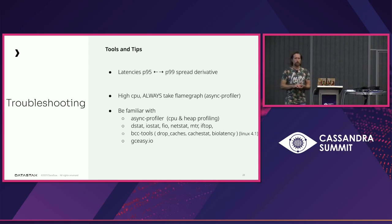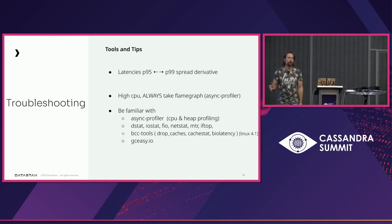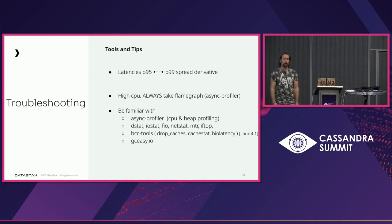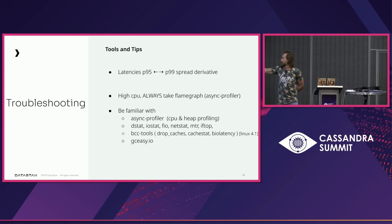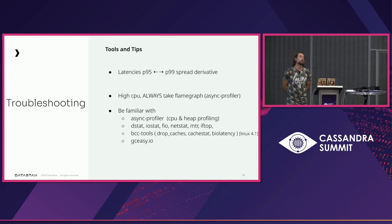If you have CPU problems or CPU getting saturated, take a flame graph before you do anything — even if you're 100% confident you know the problem. Flame graphs are also a fantastic way to get into the Cassandra codebase, which is not easy to read from scratch. Use async-profiler to generate flame graphs. Also learn dstat, htop, and the BCC tools if you have a newer kernel. For GC profiling, even though G1 with the latest JVM settings is usually fine, if you want to do GC tuning just use the GCeasy website — it's fantastic and it's free.